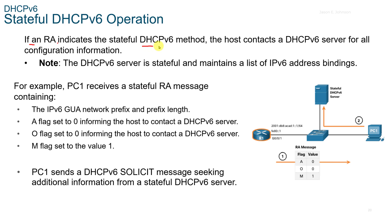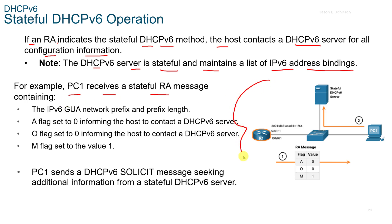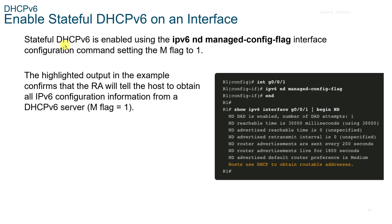If an RA indicates the stateful DHCPv6 method, the host contacts a V6 server for all configuration information, and the DHCPv6 server is stateful and maintains a list of V6 address bindings. For example, PC1 receives a stateful RA message containing the V6 GUA network prefix and prefix length. The A flag is set to 0, the O flag is set to 0, and the M flag is set to 1. PC1 then sends a V6 Solicit message seeking information from a stateful DHCPv6 server. Stateful DHCPv6 is enabled using the IPv6 ND managed-config-flag interface config command, setting the M flag to 1.